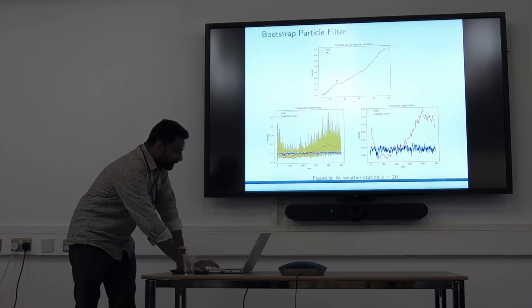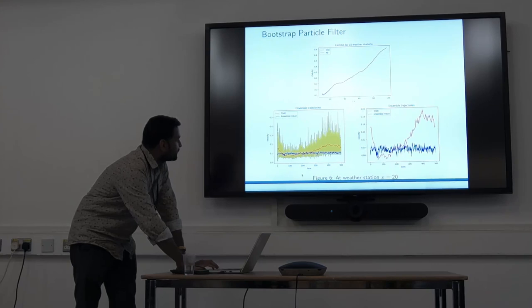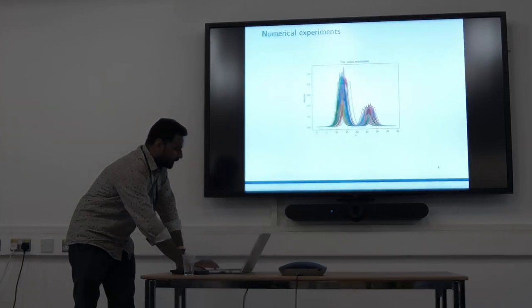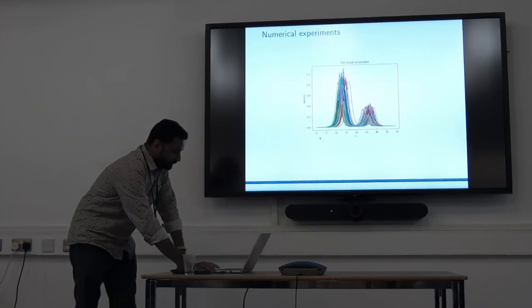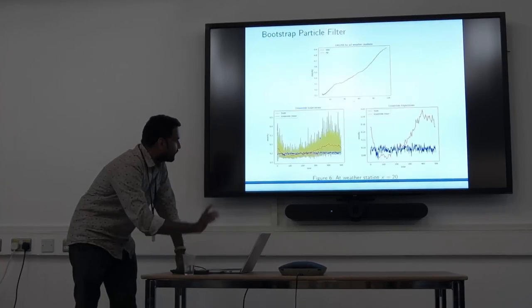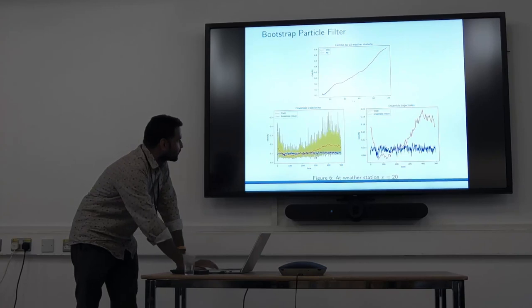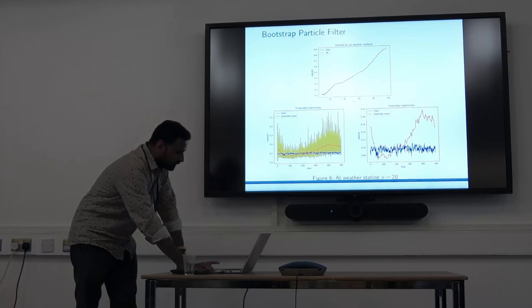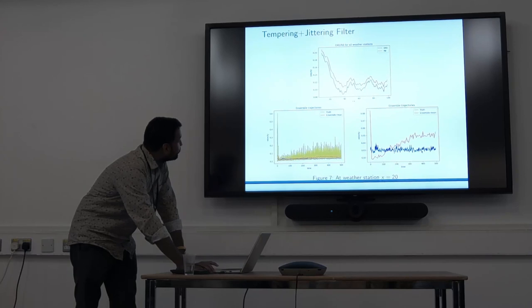The RMSE for bootstrap filter is not good. These are the ensemble trajectories at weather station x equal to 20. We have 40 x points, so I'm taking at 20, but we can take any x points we need. We can see that ensemble mean is not tracking very well the truth in the bootstrap particle filter.